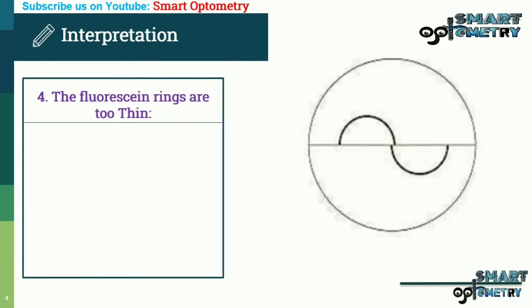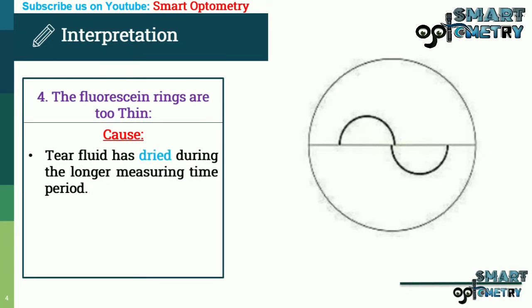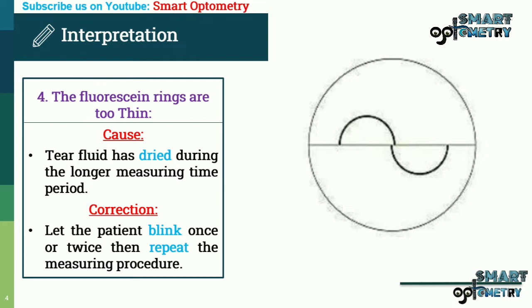Fluorescent rings are too thin. This is because the tear fluid has dried during the longer measuring time period. The correction is to let the patient blink once or twice, then repeat the measuring procedure.